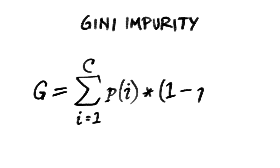Genie impurity is a metric that ranges from 0 to 1 where lower values indicate less uncertainty or mixing at a node. It gives us our chance of being incorrect.